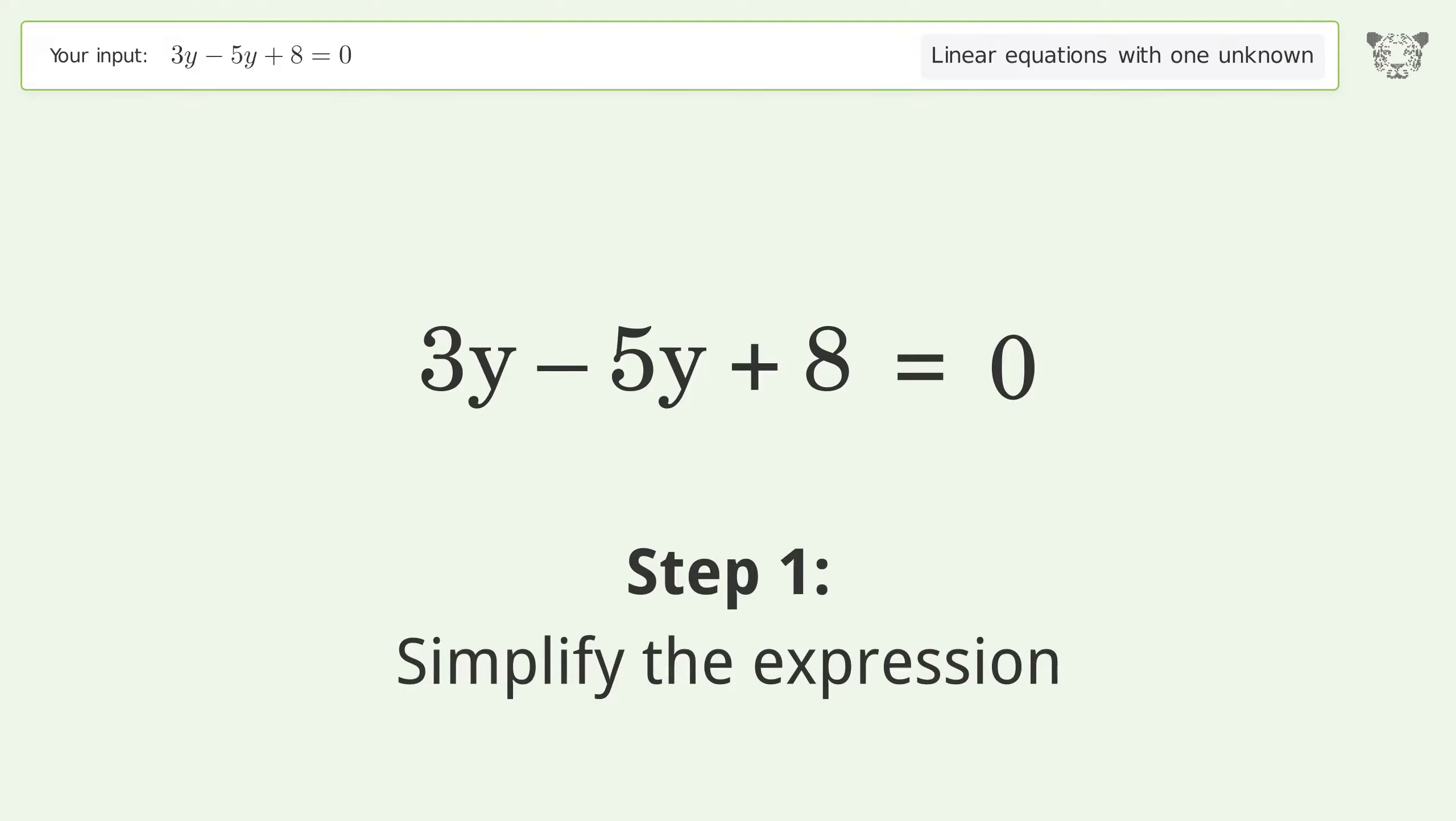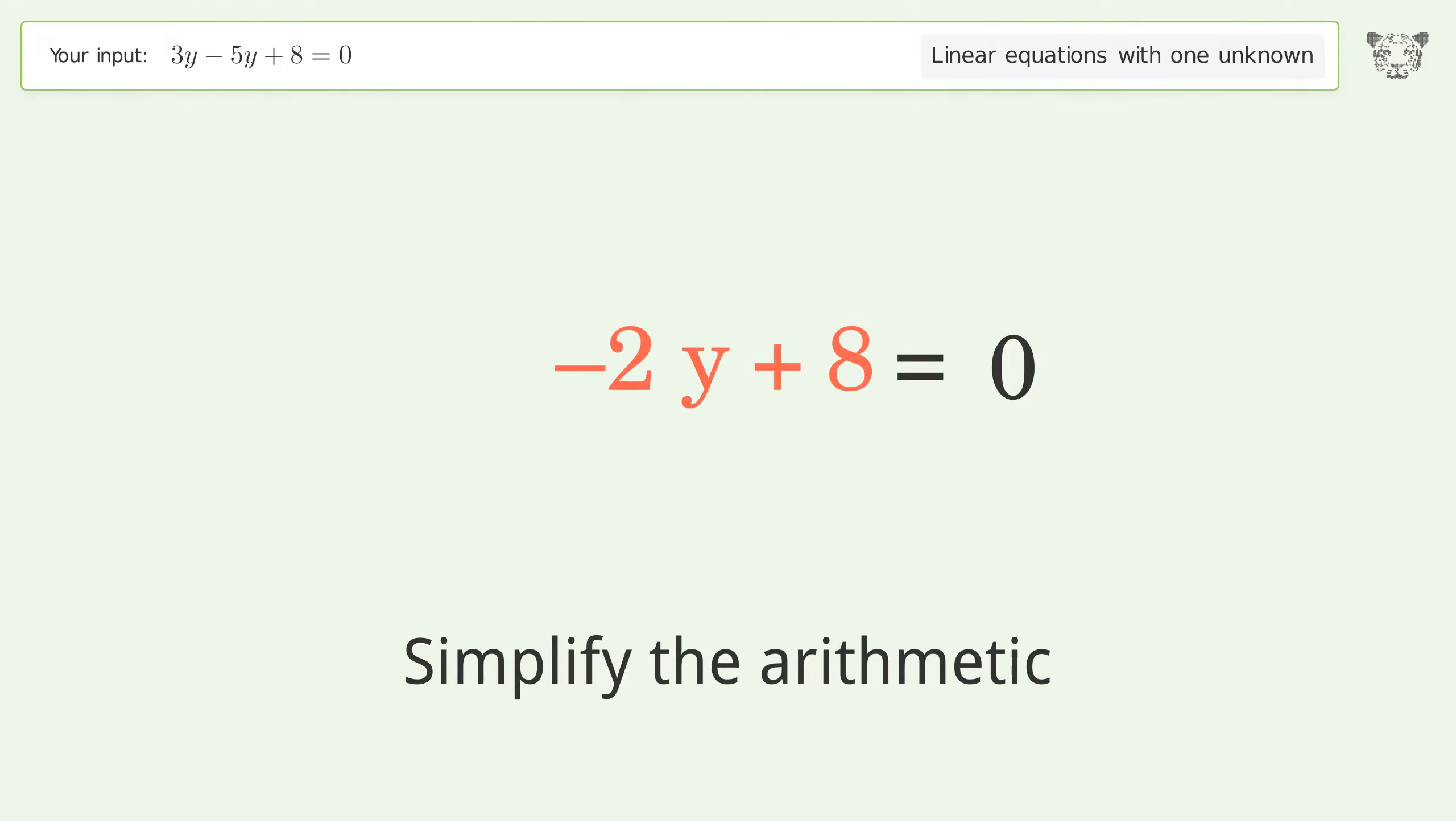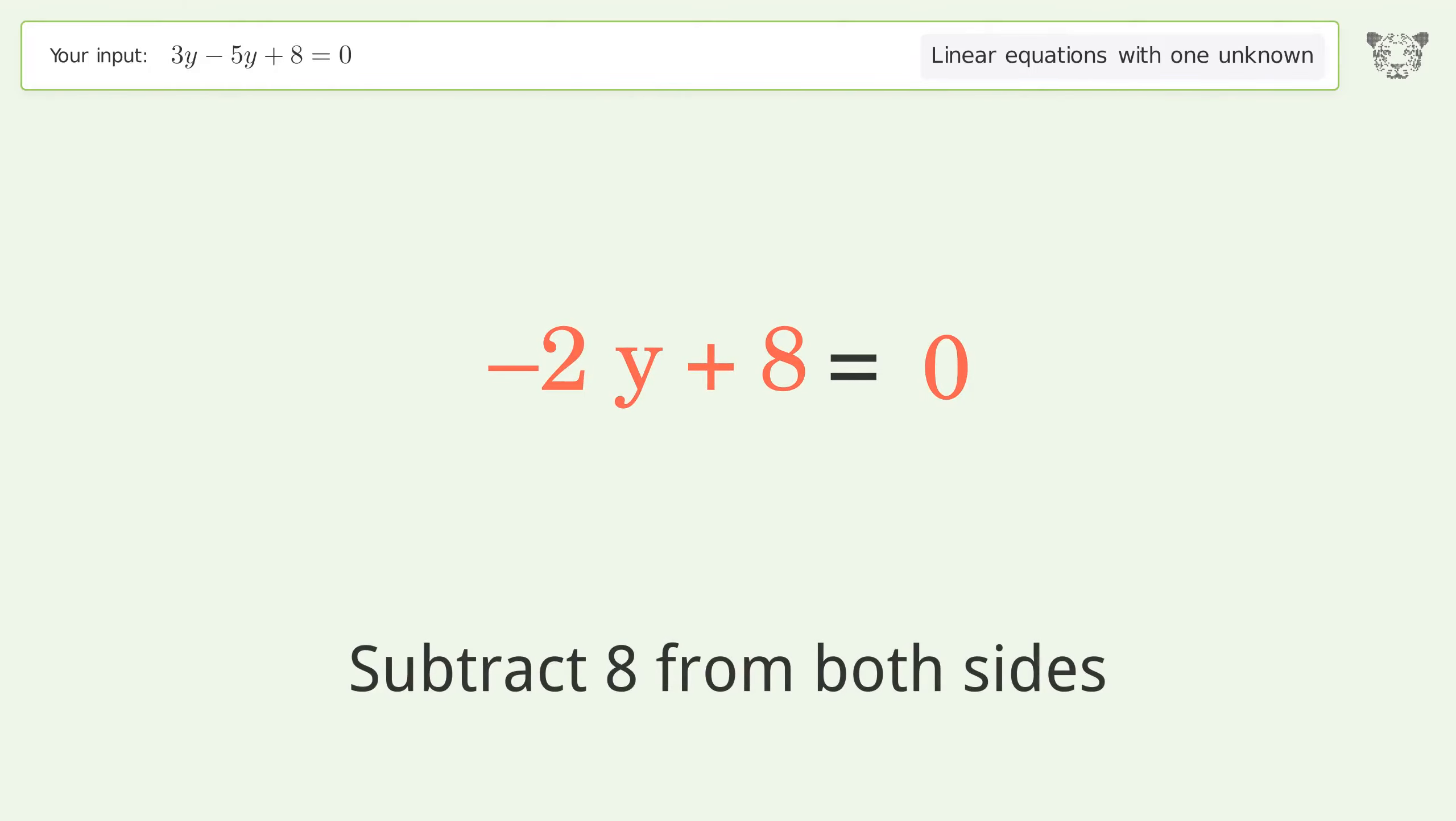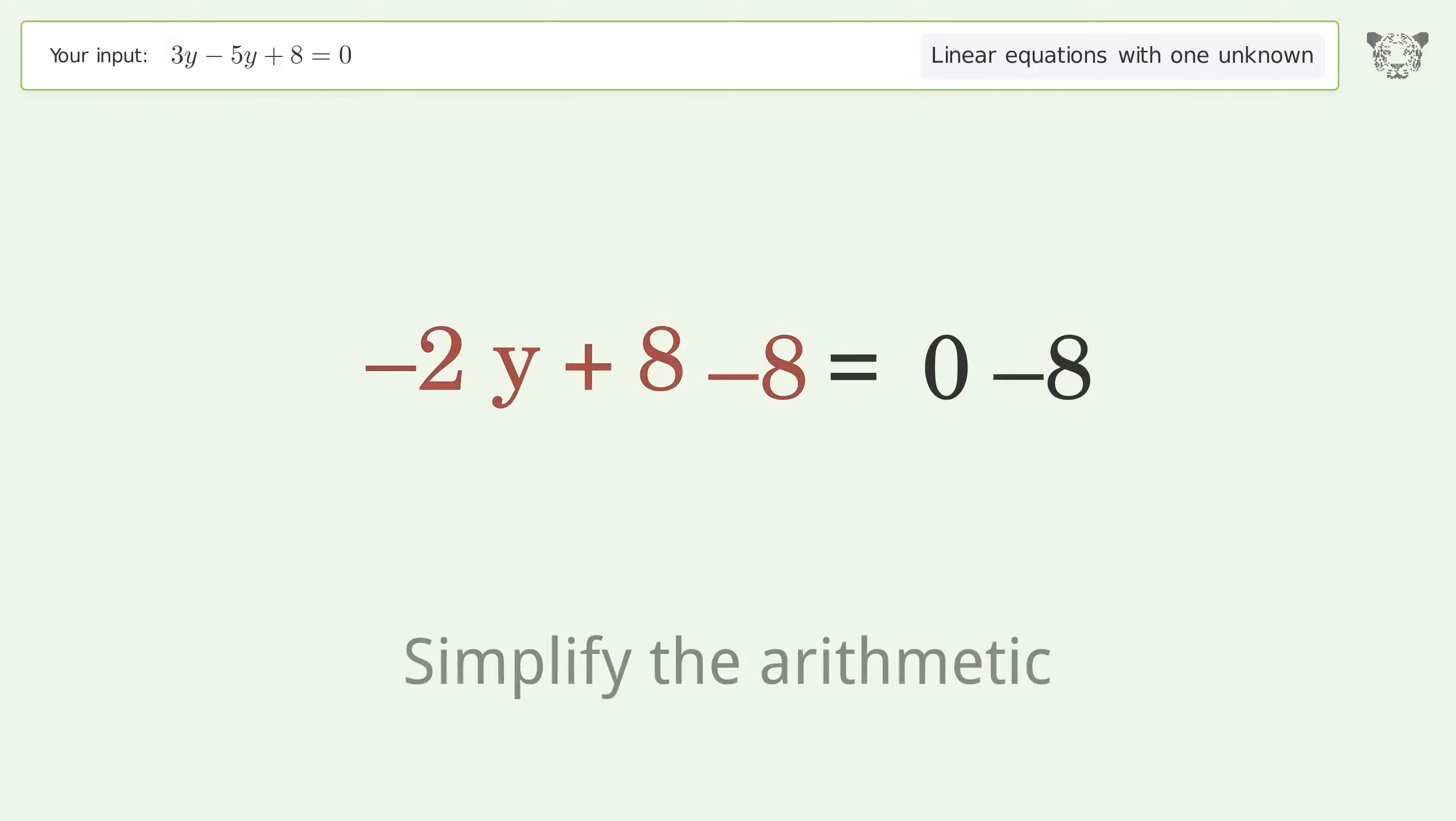Simplify the expression and arithmetic. Group all constants on the right side of the equation. Subtract 8 from both sides and simplify the arithmetic.